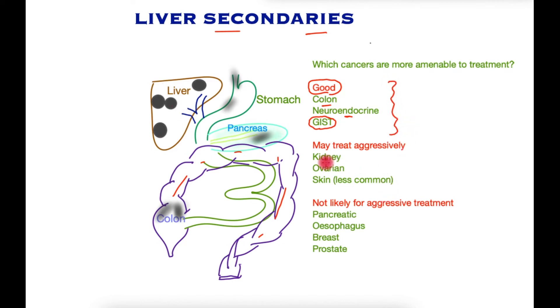Less commonly, cancers arising in the kidney, the ovary, or the skin which metastasize to the liver may also be considered for interventional treatments.